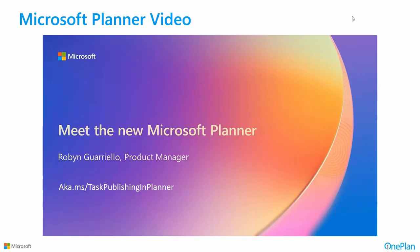Hopefully that gave you an initial look at what's coming. The convergence includes the basic Planner license you still get, plus a premium tier that adds the mix of Project for the Web capabilities, as well as Copilot — all within the same Planner UI.